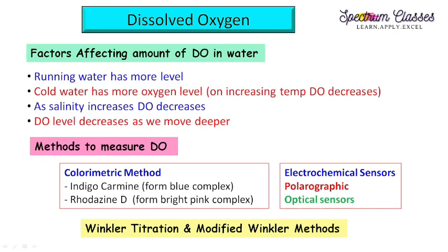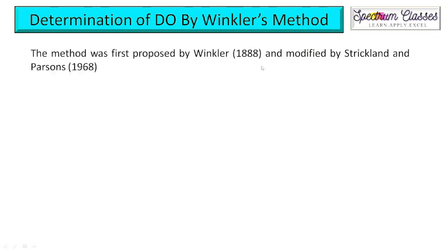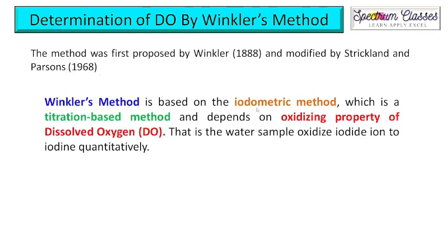Here in this video we are going to determine dissolved oxygen by modified Winkler's method. Winkler's method was first proposed by Winkler in 1888 and was later modified by Strickland and Parsons in 1960. According to this method, it is based on the iodometric method, which is an indirect titration method. I have discussed iodometric titration in detail and will give the link in the description box. This titration method basically depends on the oxidizing property of dissolved oxygen, which oxidizes iodide ions to iodine quantitatively.